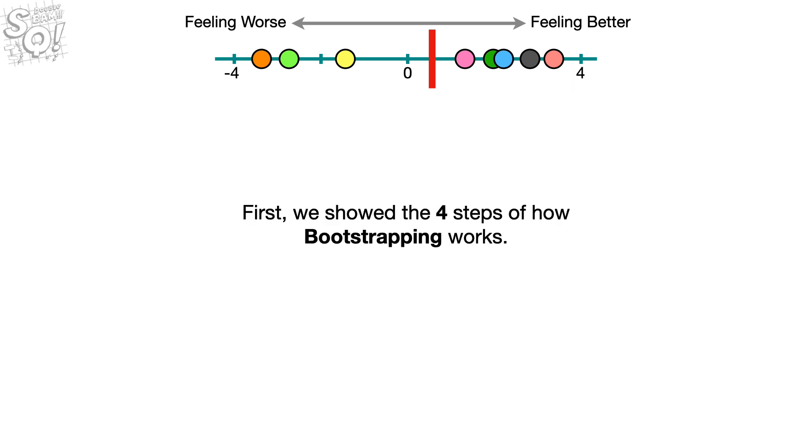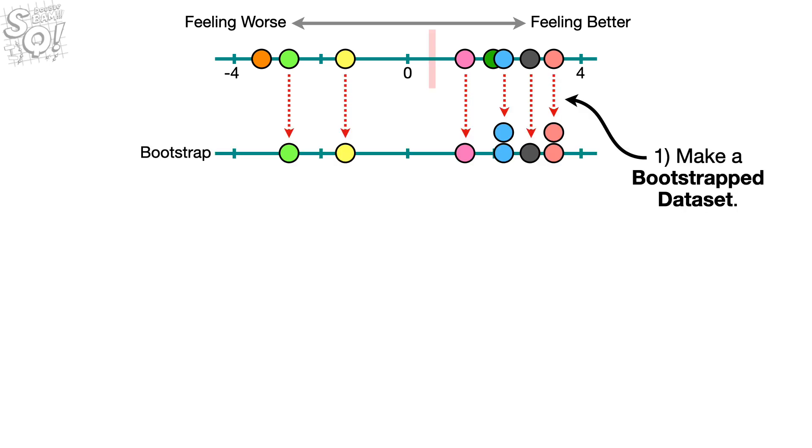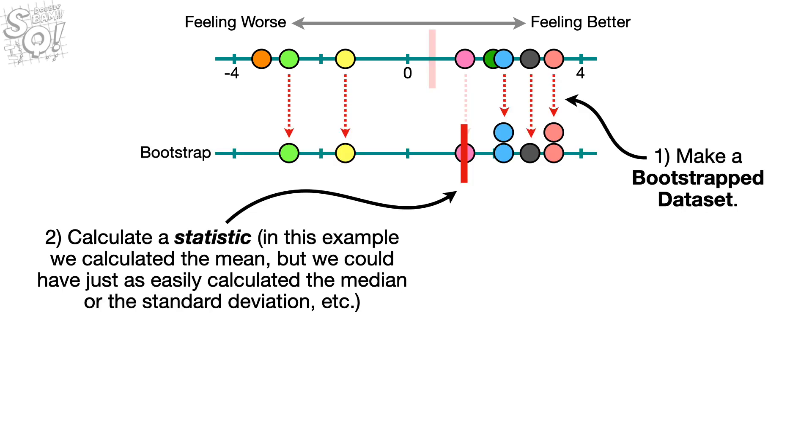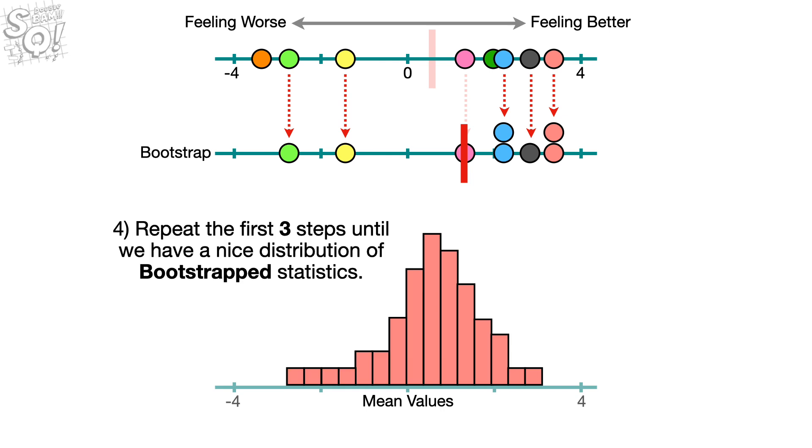First, we showed the four steps of how bootstrapping works. 1. Make a bootstrapped data set. 2. Calculate a statistic. In this example, we calculated the mean, but we could have just as easily calculated the median or the standard deviation, etc. 3. Keep track of that calculation. And 4. Repeat the first three steps until we have a nice distribution of bootstrapped statistics.